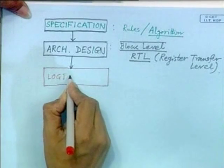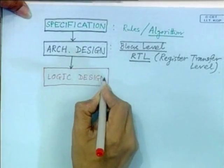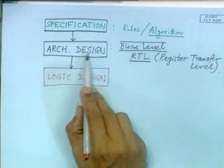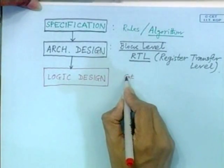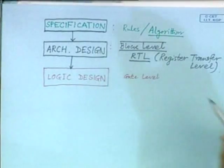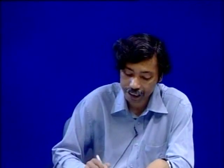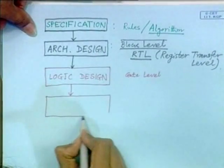The next level is logic design, where we realize each architectural block in terms of gate-level designs. Gate level includes NAND gates, AND gates, multiplexers, flip-flops — blocks whose functionality is completely defined. When we say it is a two-input AND gate, you immediately understand that when all inputs are high, the output is high. At the logic level, we put all these gates together to realize the blocks mentioned in the architectural design.